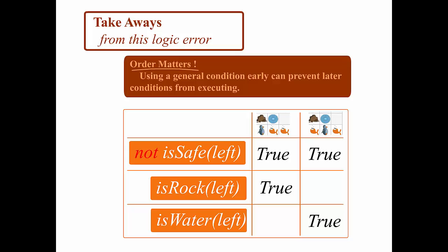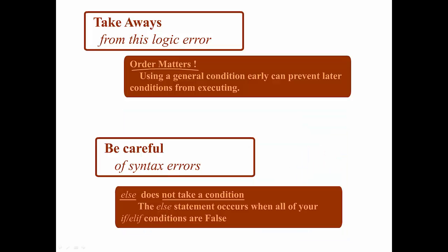Even though isRockLeft was true the first time we ran the loop, and isWaterLeft was true the second time. What I'm getting at is that order matters in IF-ELIF-ELSE combos, and using a general condition early on can prevent other conditions from executing.